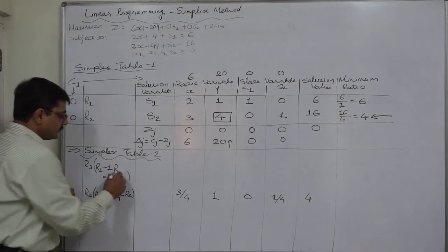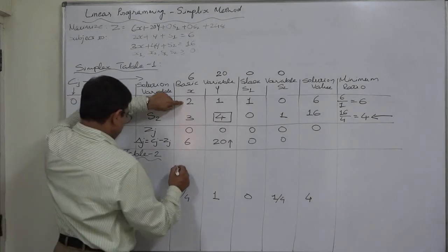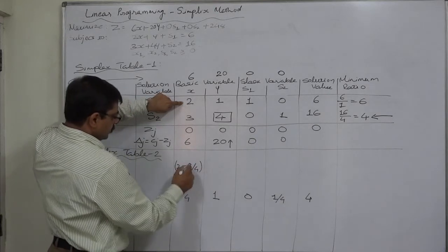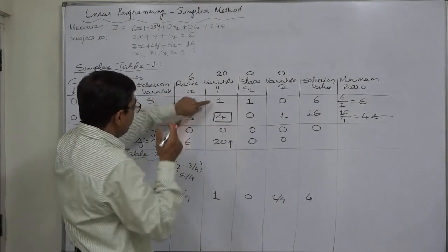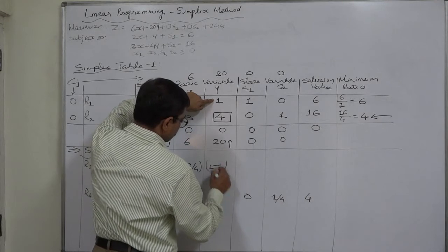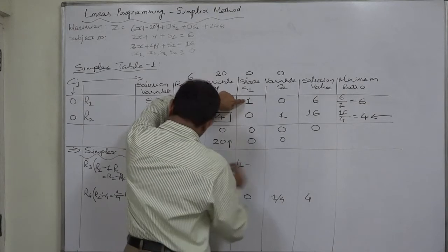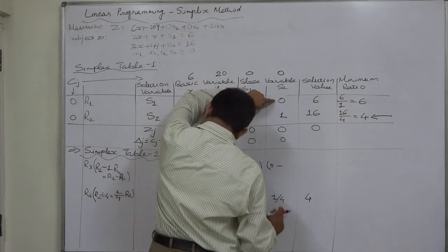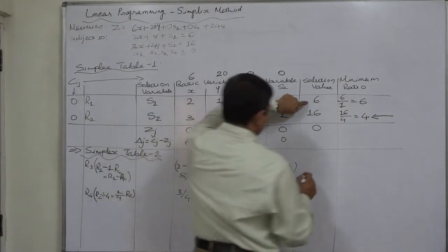Anything multiplied by 1 remains the same, r1 remains the same. R1 minus r4: here r1 is 2 minus r4 is 3/4. R1, 1, minus r4 that is 1. R1, 1, minus r4 is 1/4, so minus 1/4. R1 that is 6 minus r4 that is 4, so 2.